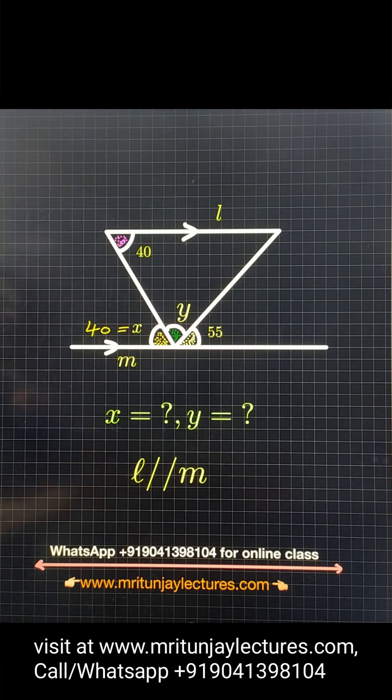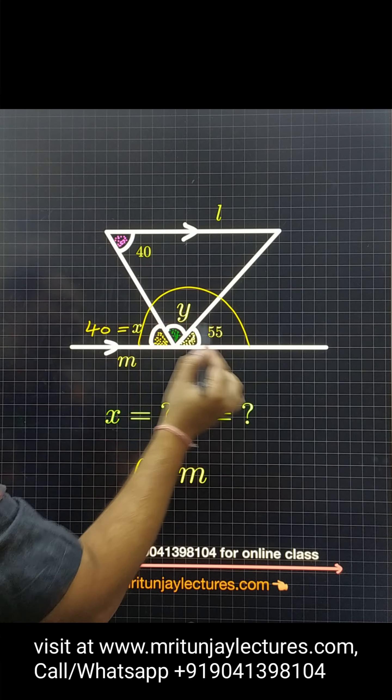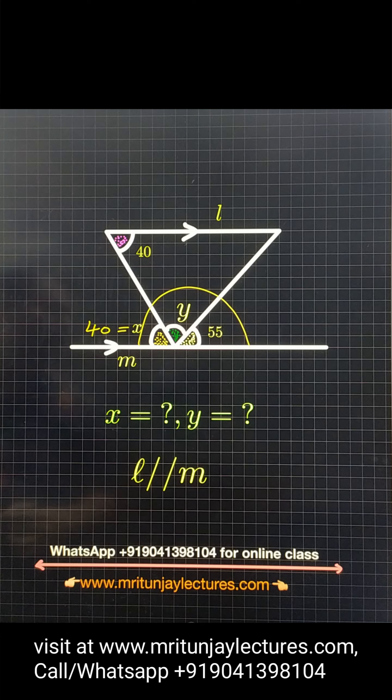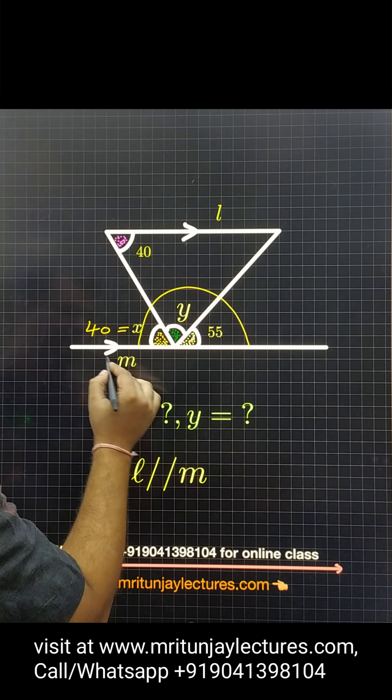x is how much? 40 degrees. Now after that, the sum of these three angles is how much? 180, because this one is a straight line.